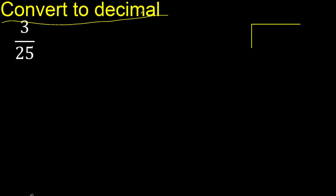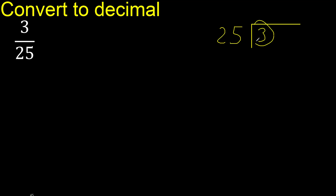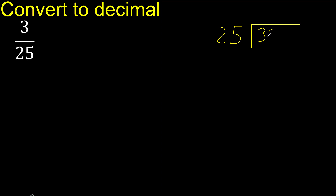3 divided by 25. Since 3 is less than 25, we complete with 0 and place a decimal point here.